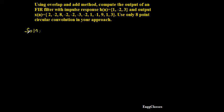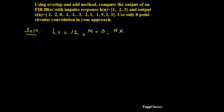First let me write LS — that stands for the length of the input sequence. Count the number of samples: 1, 2, 3, 4, 5, 6, 7, 8, 9, 10, 11, 12 — so LS equals 12. Similarly, the length of the impulse response M equals 3. Capital N is the DFT size; since we use only 8-point circular convolution, N equals 8.